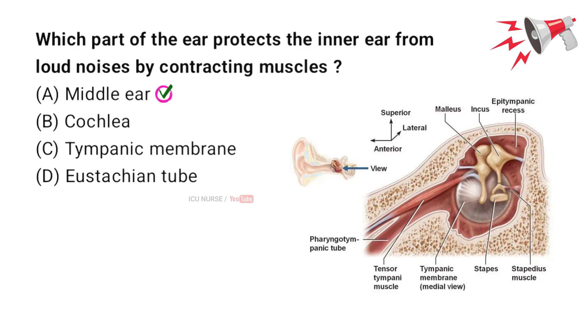The part of the ear that protects the inner ear from loud noises is the middle ear. It does this by contracting two small muscles: the tensor tympani and the stapedius.